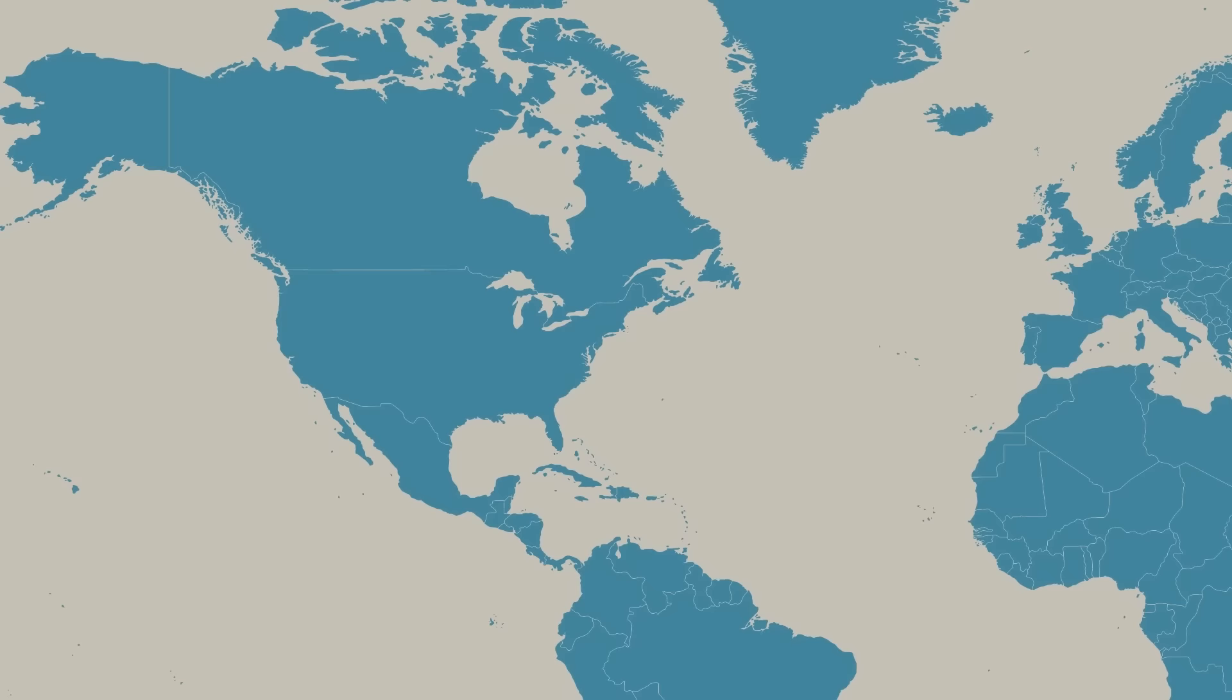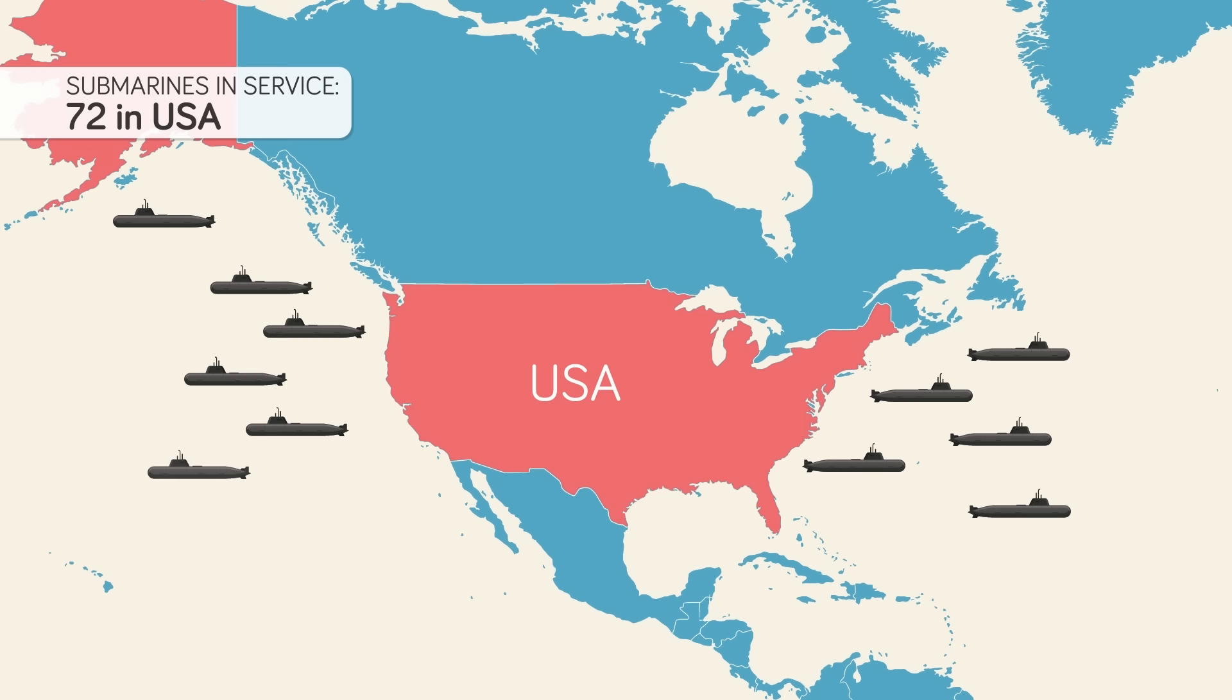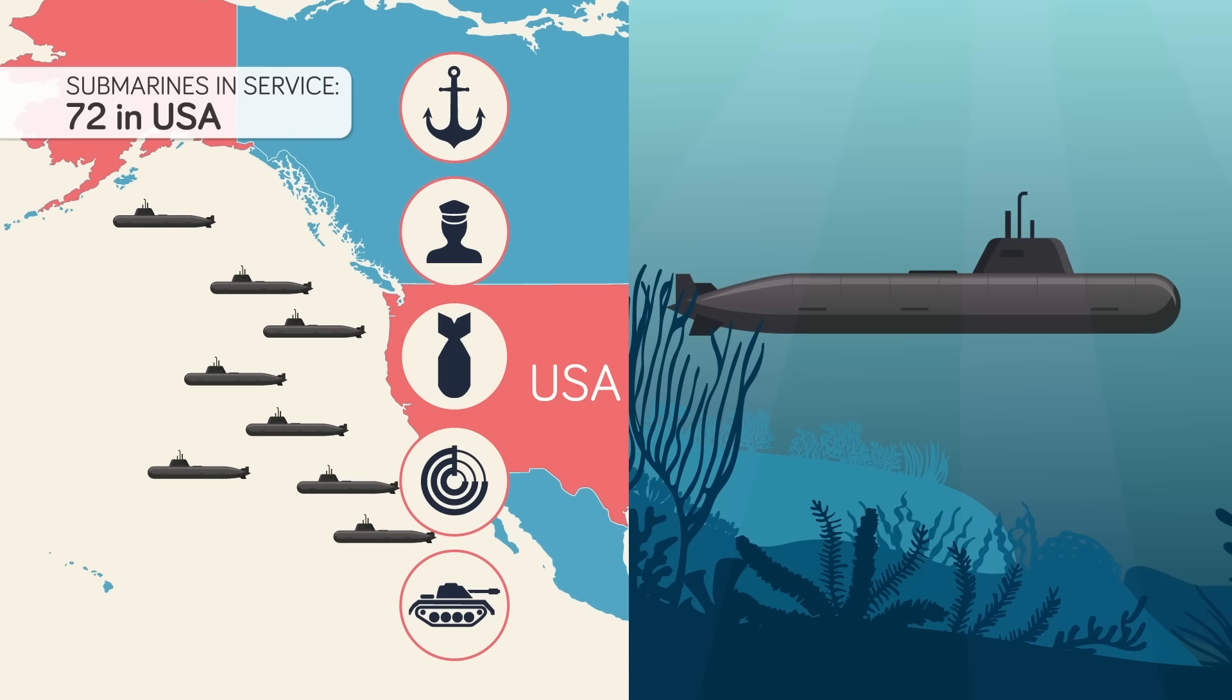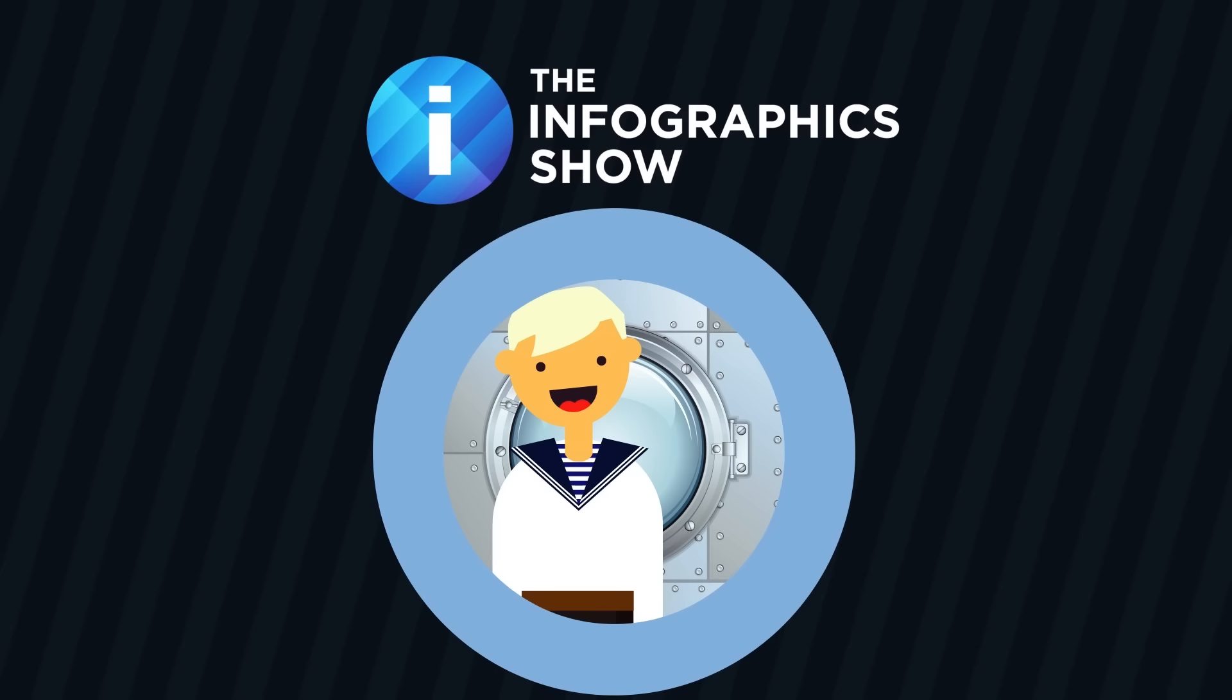With 72 submarines in service, the United States fields the largest underwater fighting force in the world. Stealthy and absolutely deadly against surface vessels, submarines are tasked with deterring foreign aggression, nuclear deterrence, intelligence gathering, and even providing fire support for land forces with land attack missiles. But for the most of a submarine's lifespan, it will glide through the oceans of the world completely undetected, and as they say, out of sight, out of mind. What is life like under the sea for those who man these secretive weapons of war though? Hello and welcome to another episode of the Infographics Show, today we are taking a look at what life is like aboard a submarine.